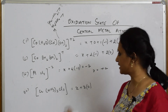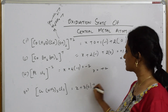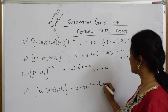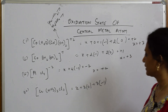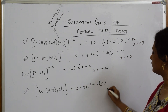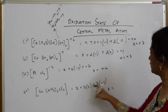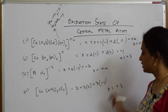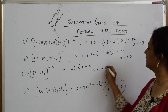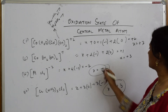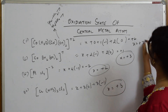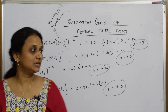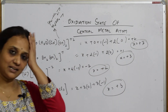For the chromium complex: X for chromium, ammonia is a neutral ligand, and there are 3 chlorine ligands each with charge minus 1. Solving: X + 0 + 3 × (−1) = 0, therefore X = +3.